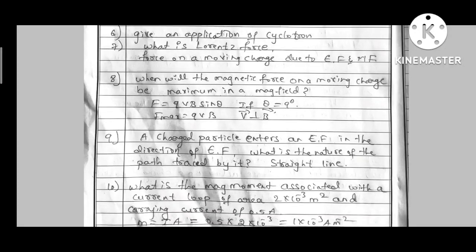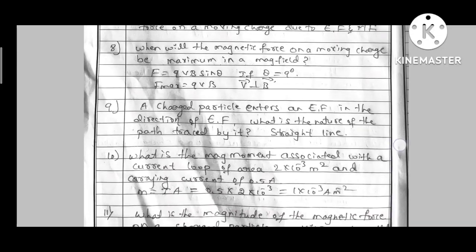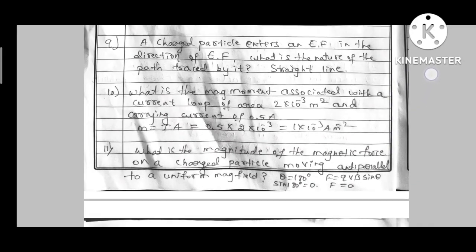When theta is 90 degree, V perpendicular to B, force maximum. Ninth question. A charged particle enters an electric field in the direction of electric field. What is the nature of the path traced by it? Straight line.